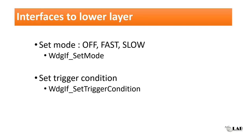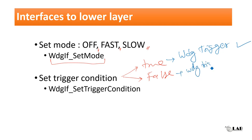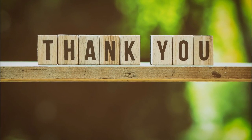For the lower layer interfaces, the first is for setting modes - fast mode, slow mode, and off mode - which the Watchdog Manager can request via the watchdog interface by calling the corresponding API. The second interface is for setting the trigger condition. In each WdgM main function cycle, it updates the trigger condition, and based on this the watchdog driver performs the trigger. For example, when we want to do a reset and the global status is Expired, it will update the trigger condition to false, so the watchdog trigger won't take place and we get the microcontroller reset. Thank you for listening, please subscribe.